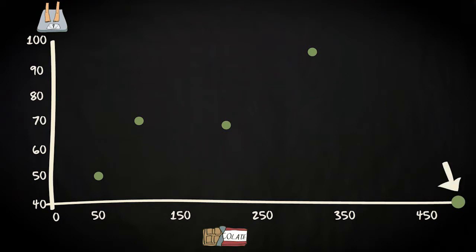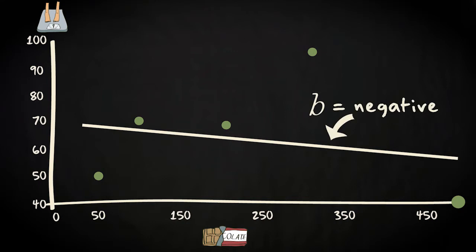This person eats 500 grams of chocolate per week, and weighs only 40 kilograms. Adding this case to our analysis strongly changes the result. The slope of the regression line now is not positive anymore, but negative, indicating that the more chocolate you eat, the less you weigh.